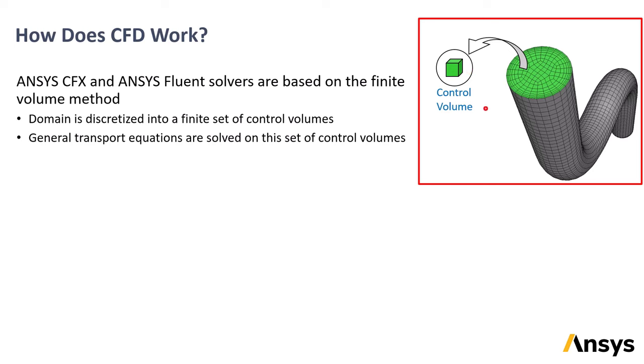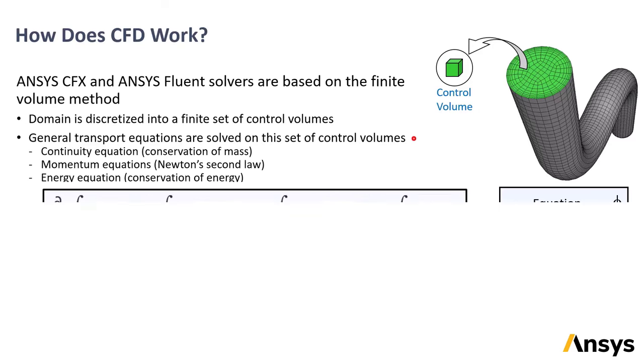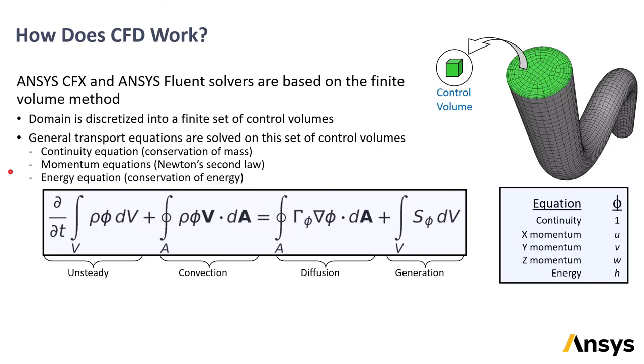Now, for each individual control volume, we can write the equations that we are solving. These would include conservation of mass, the momentum equations, which are derived from Newton's second law of motion, and then possibly also conservation of energy or species, depending on the problem that's being solved.